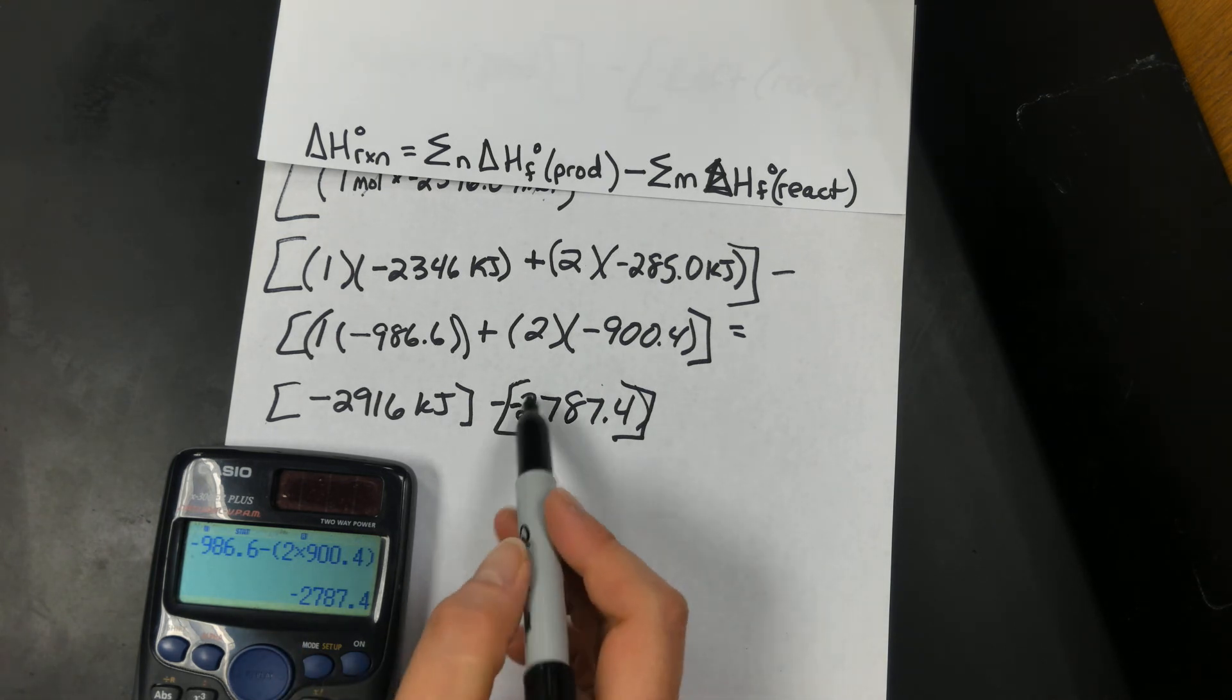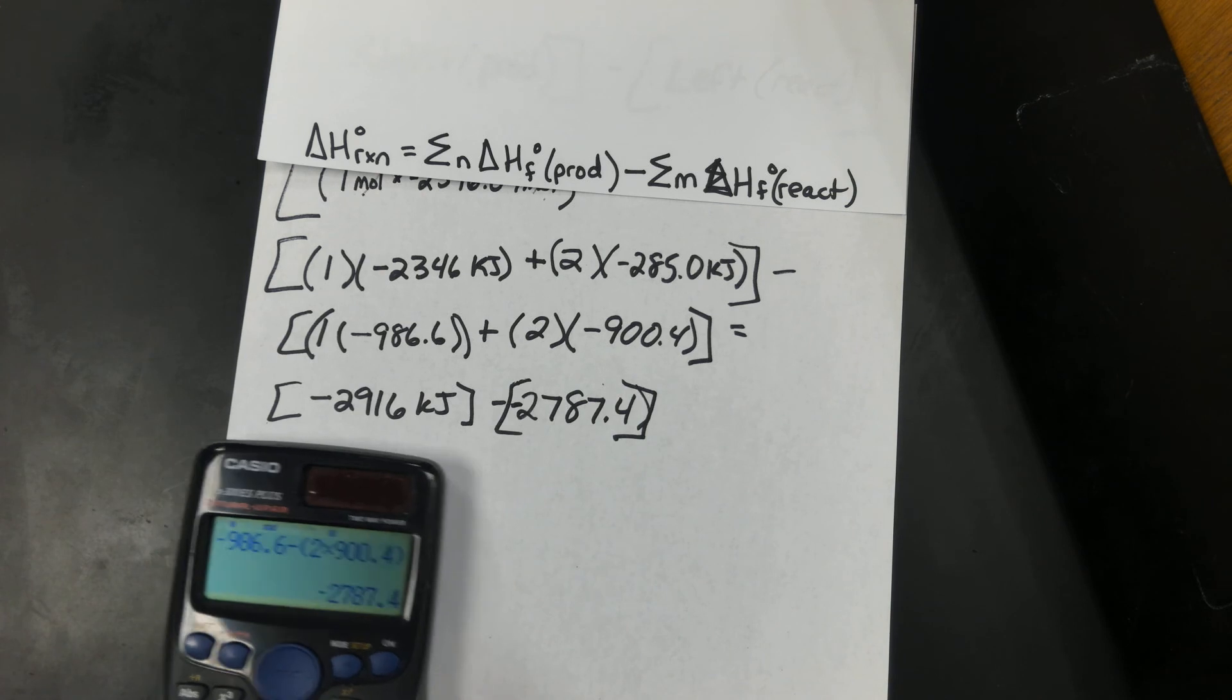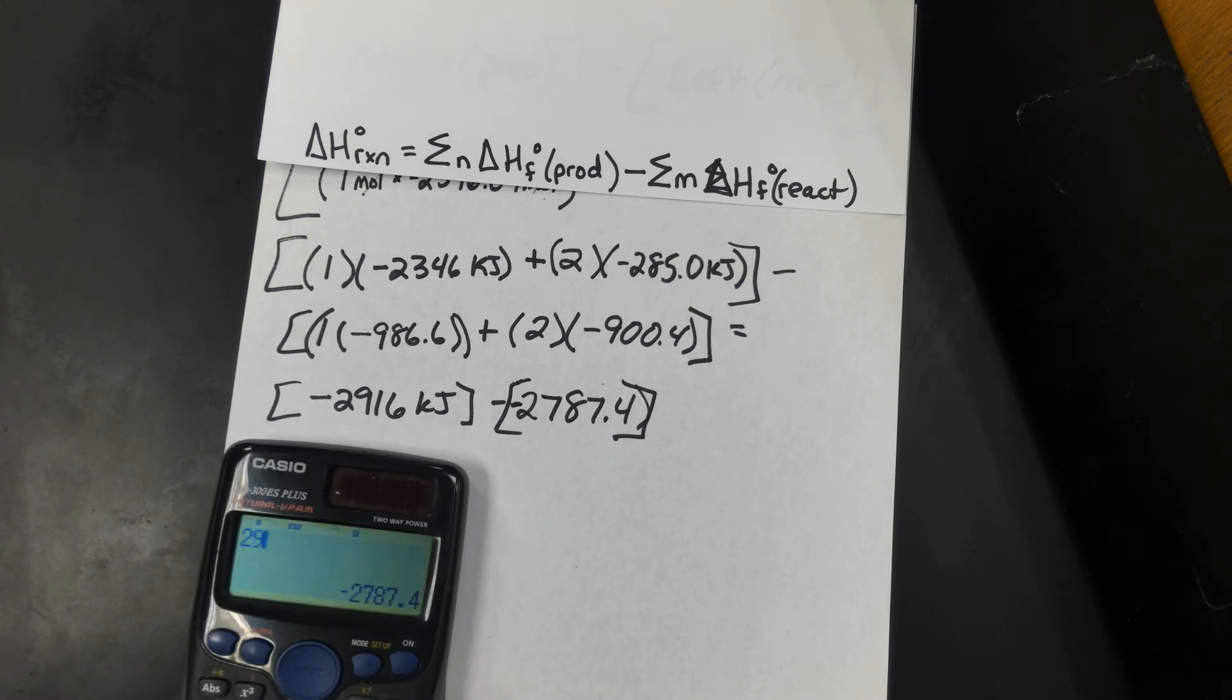So this is going to be essentially adding. So it's going to be negative 2916 minus a negative 2787.4, or you could have typed plus, wouldn't matter. So I get negative 128.6, and the unit is kilojoules.